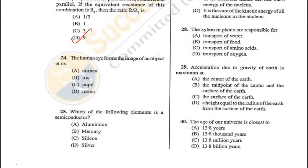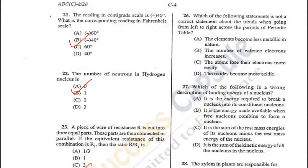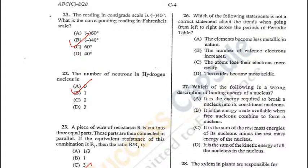Question 24: The human eye forms an image of an object at its retina — D is the correct answer. Question 25: Which of the following elements is a semiconductor? It is silicon, as it is used in maximum chips — C is the answer. Question 26: Which is not a correct statement regarding the periodic table from left to right? Statement C is incorrect — the tendency of an atom to lose electrons decreases moving from left to right. So C is the answer.